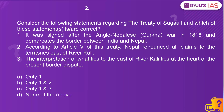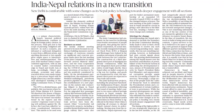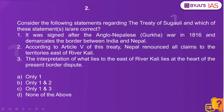Now let's look at question number two. Consider the following statements regarding the Treaty of Sugauli — which of these statements is or are correct? The context is today's The Hindu newspaper, with a column on India-Nepal relations in a new transition. This treaty was signed after the Anglo-Nepali or Gurkha War in 1816, and it demarcates the border between India and Nepal. According to Article 5 of this treaty, Nepal renounced all claims to the territories east of river Kali, and the interpretation of what lies to the east of river Kali lies at the heart of the present border dispute.